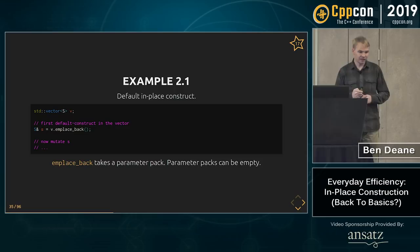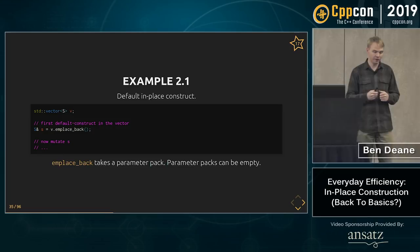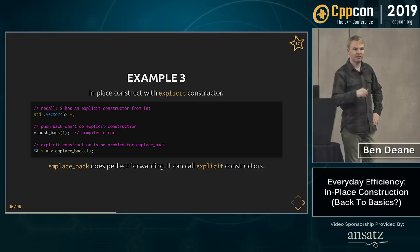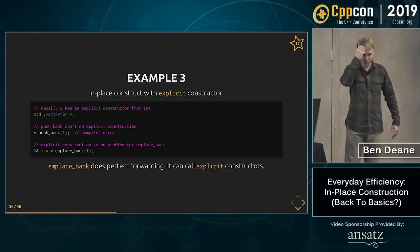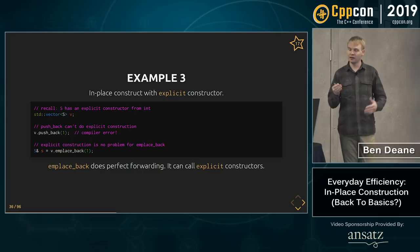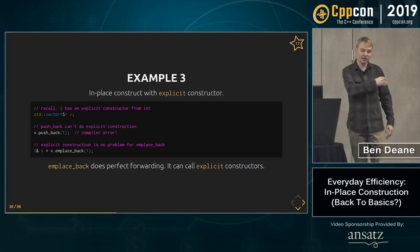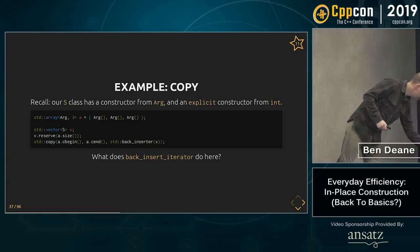emplace_back takes a parameter pack, so one useful thing you can do is default construction, which you can't otherwise do — a parameter pack can be empty. And because it takes a parameter pack and perfectly forwards its args, it can also take advantage of explicit constructors. Our class S has an explicit constructor from int — we can't push_back an int because push_back needs implicit construction, but emplace_back works.